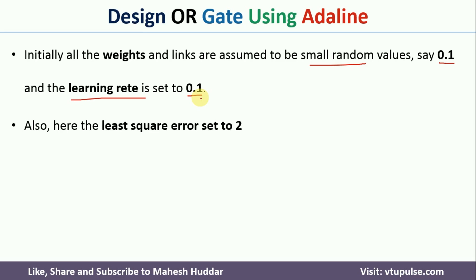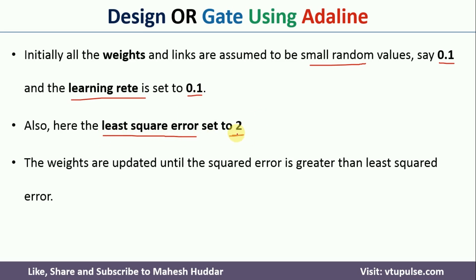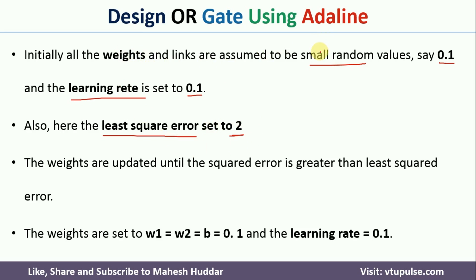One more important part of the ADALINE Neural Unit is the expected error, also called the least squared error. I will set the value of that particular least squared error to 2. Unless the calculated error is less than 2, we need to go back, update the weights, and train our ADALINE network. As a summary: W1, W2, and bias are set to 0.1; learning rate is 0.1; and least squared error threshold is 2.